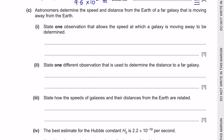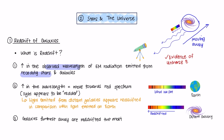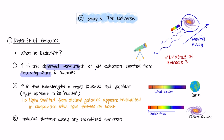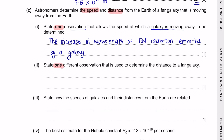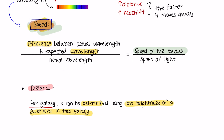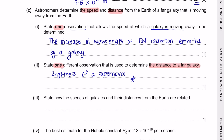Question part C: Astronomers determine the speed and distance from the Earth of a far galaxy that is moving away from the Earth. Part 1: State one observation that allows the speed at which a galaxy is moving away to be determined. Redshift is the increase in the observed wavelength of electromagnetic radiation emitted from a receding star. This is one evidence that the universe is expanding, so the observation is that there is an increase in the observed wavelength of electromagnetic radiation emitted. Part 2: State one observation used to determine the distance to a far galaxy. The distance to a galaxy can be determined by the brightness of a supernova.